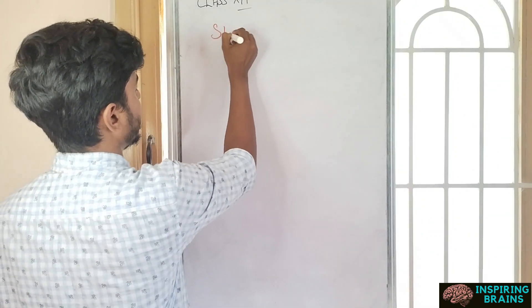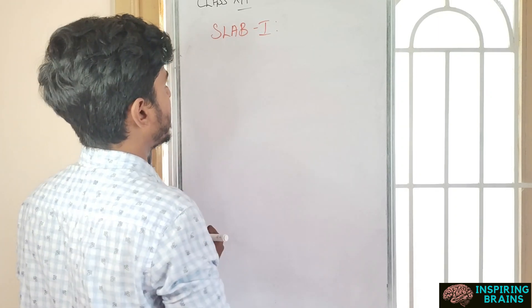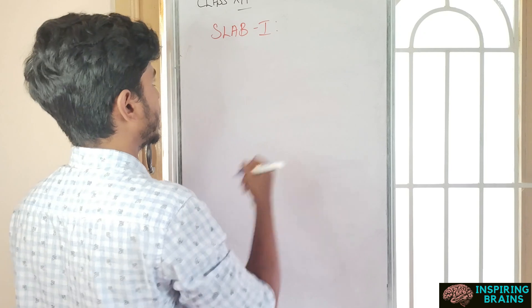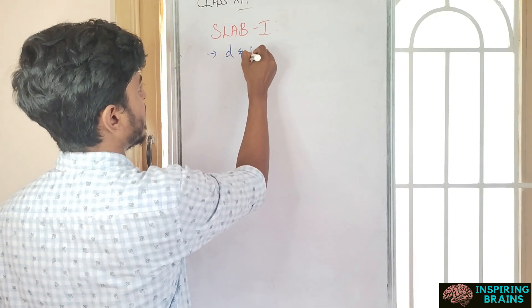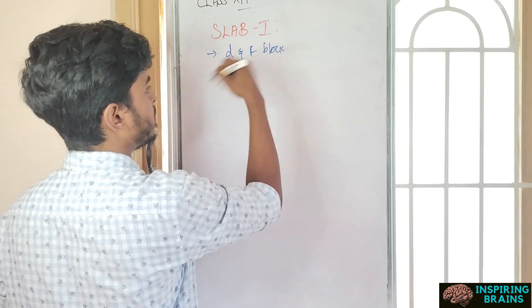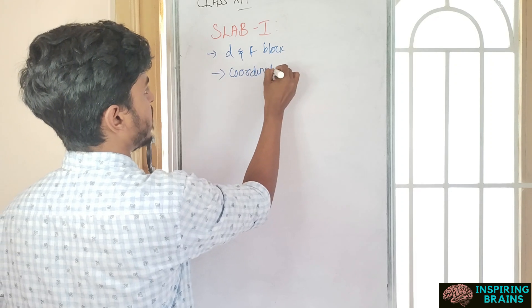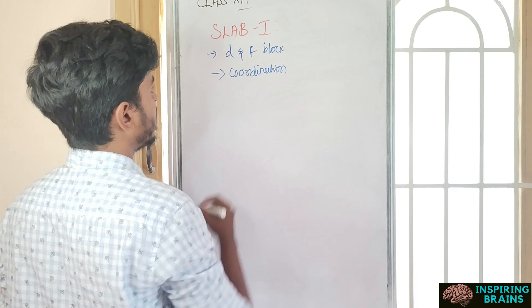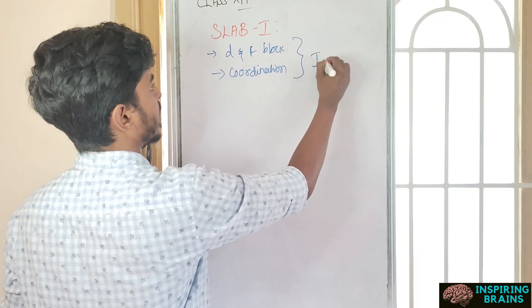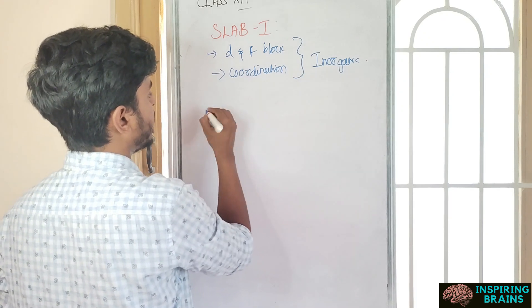I am classifying as slab 1 and slab 2. Slab 1 is relatively easy, you can easily cover. Slab 2 needs basics. Slab 1: D and F block elements, P block, coordination as it carries maximum marks - either finish chemical bonding and coordination. When it comes to physical, go with solid state, easiest unit.